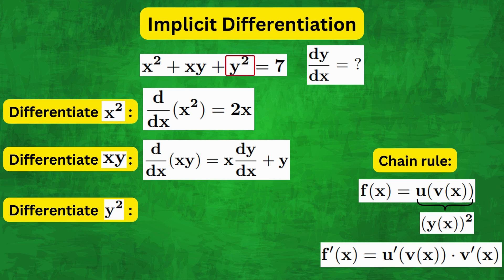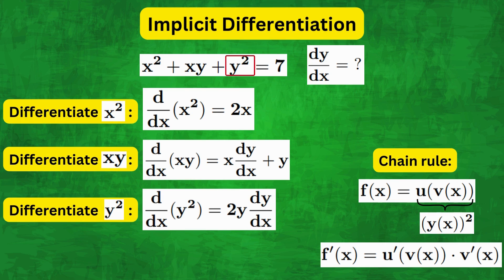So we bring the power to the front and reduce the power by 1 and multiply by the derivative of what's inside the bracket to get 2y times dy over dx.